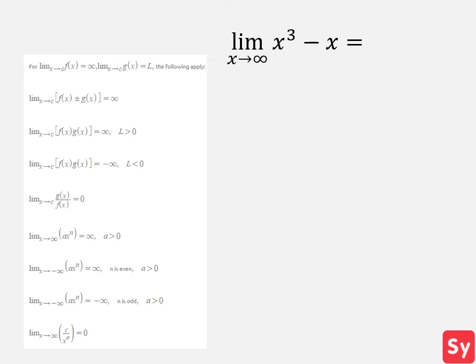Looks like we should have done some algebraic manipulation initially. So we'll do it now and we'll take out x cubed. Now we'll use a property. We see from the list we can use 2. So we'll apply them and get infinity times 1 minus 0, which simplifies to infinity our limit.